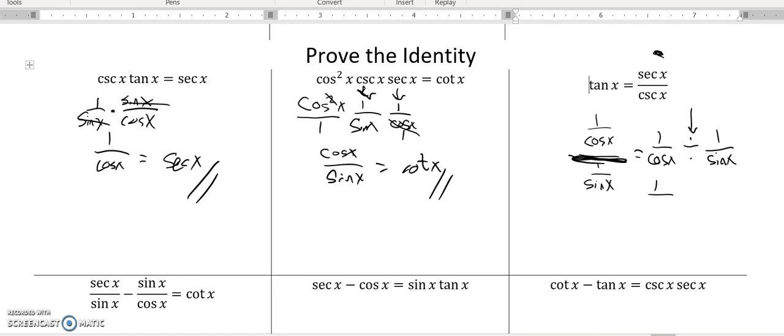When I divide by a fraction, I can take the reciprocal and multiply, so this is one over cosine times sine over one, which is sine over cosine, which is tangent. And there's the first three proven.